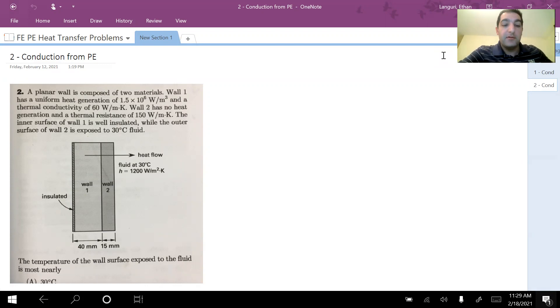A planar wall is composed of two materials. Wall one has a uniform heat generation of 1.5 times 10 to the power of 6 watt per meter cubed. So look at the unit, that's a volumetric heat generation rate. And a thermal conductivity of 60 watt per meter Kelvin. Second wall has no heat generation and thermal conductivity is given to be 150 watt per meter Kelvin.